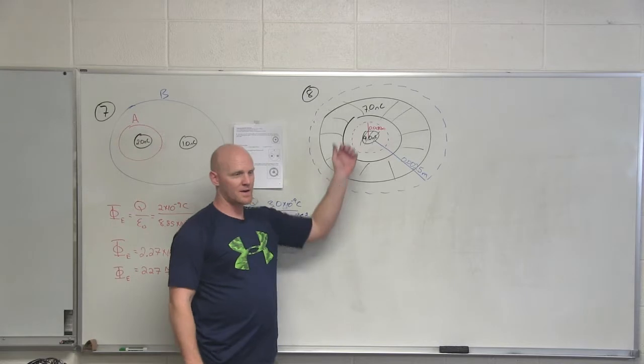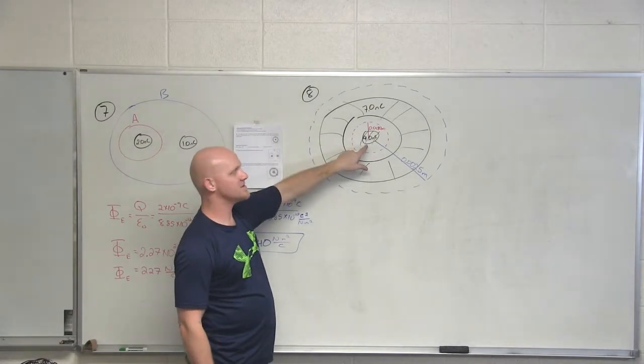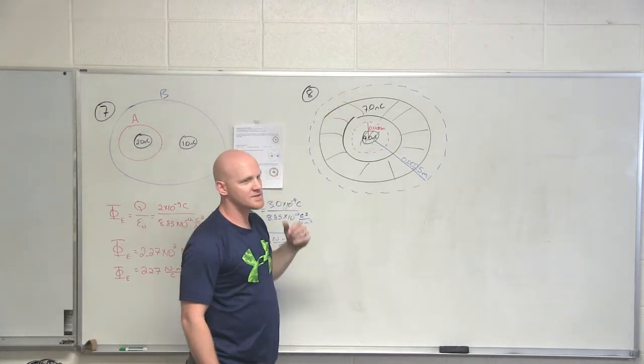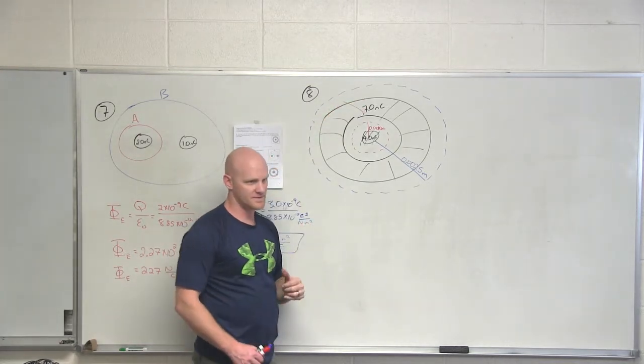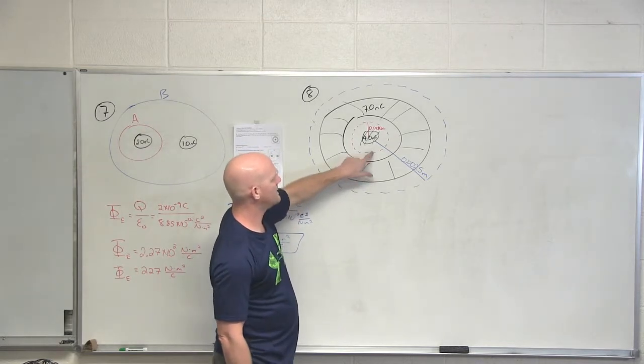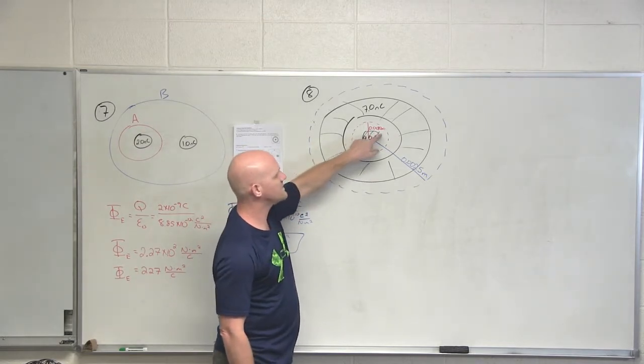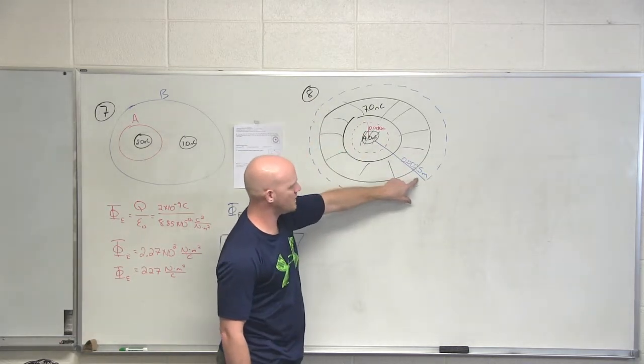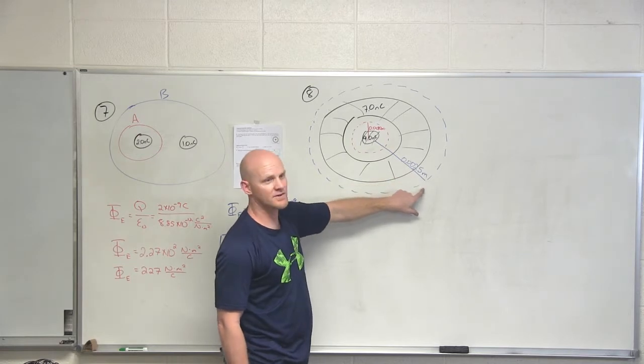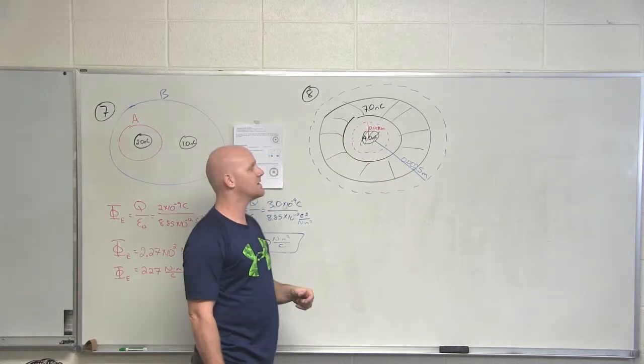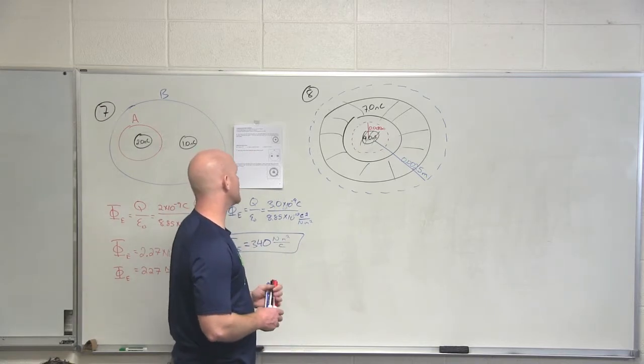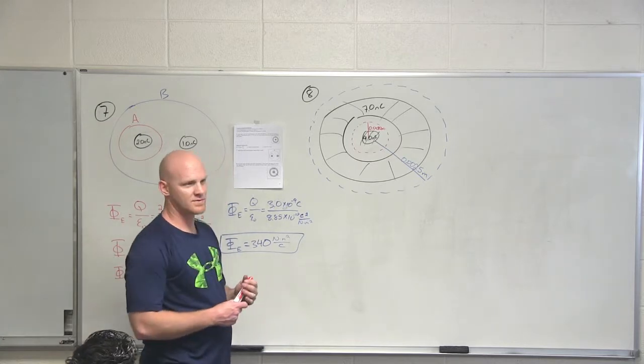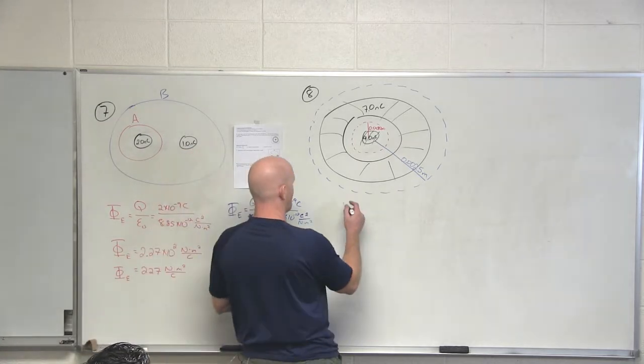All right. So for number eight, we have the same diagram we had before. We got a four-nanocoulombs charge at the center inside a hollow sphere that has a total of seven nanocoulombs of charge. And we're going to construct two different Gaussian surfaces. We're going to construct one at 0.0010 meters from the center. And then another one at 0.0025 meters from the center outside of both the solid and hollow spheres. We just want to know what is the electric field at these radii this time. And so in this case, what am I actually asking you to solve for? E.